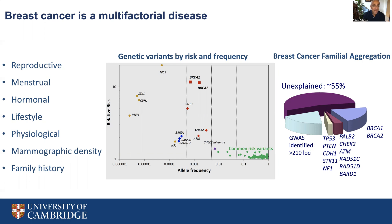All these genetic variants have been estimated to account for around 45% of the familial aggregation of breast cancer. Taking all these epidemiological and genetic factors together means that much more reliable and powerful breast cancer risk prediction can be achieved when we consider the joint effects of these risk factors together in multifactorial risk prediction, as opposed to considering the risk factors individually. The CanRisk tool, which uses the multifactorial Bodicea model, now considers the joint effects of all these factors together.